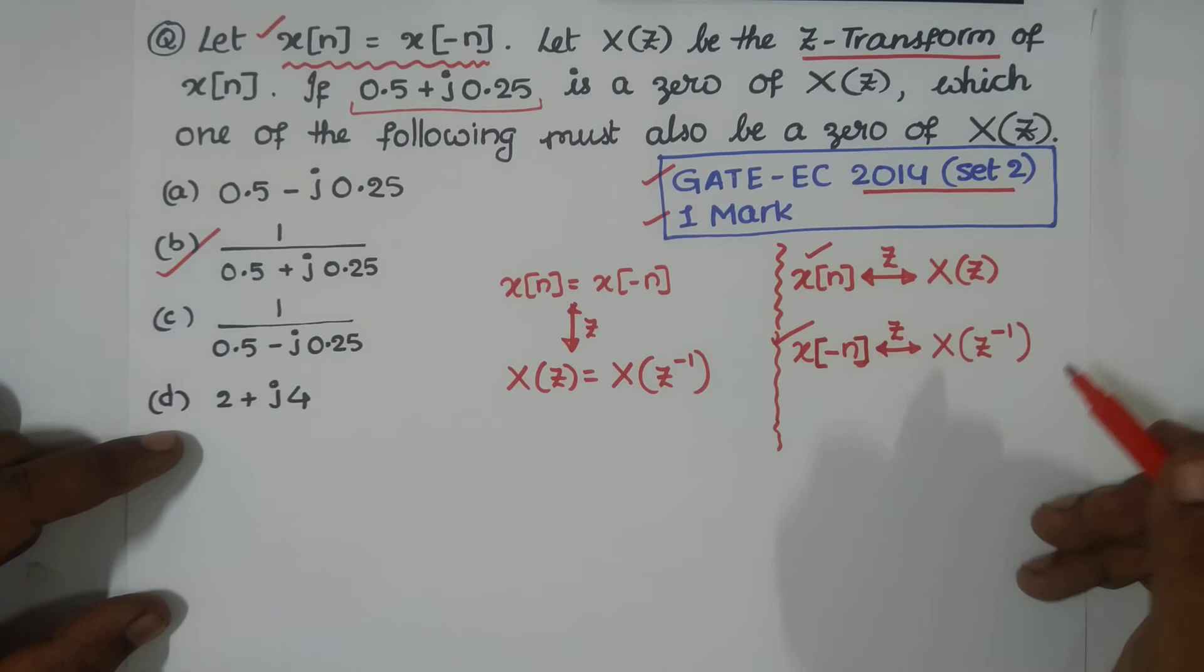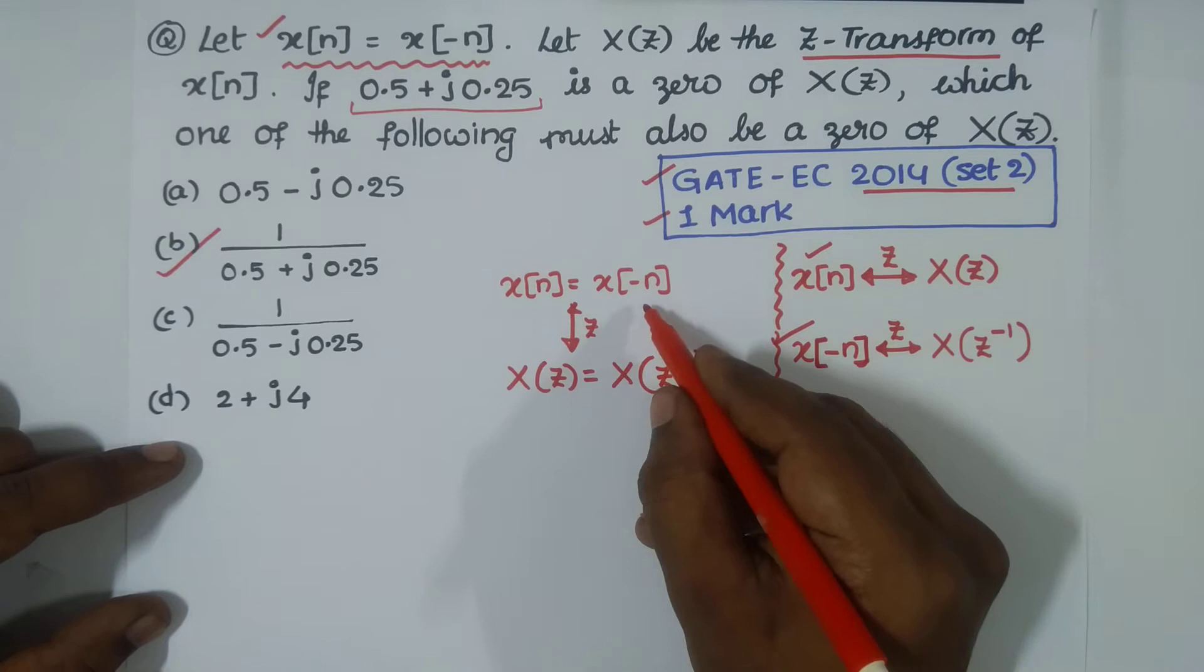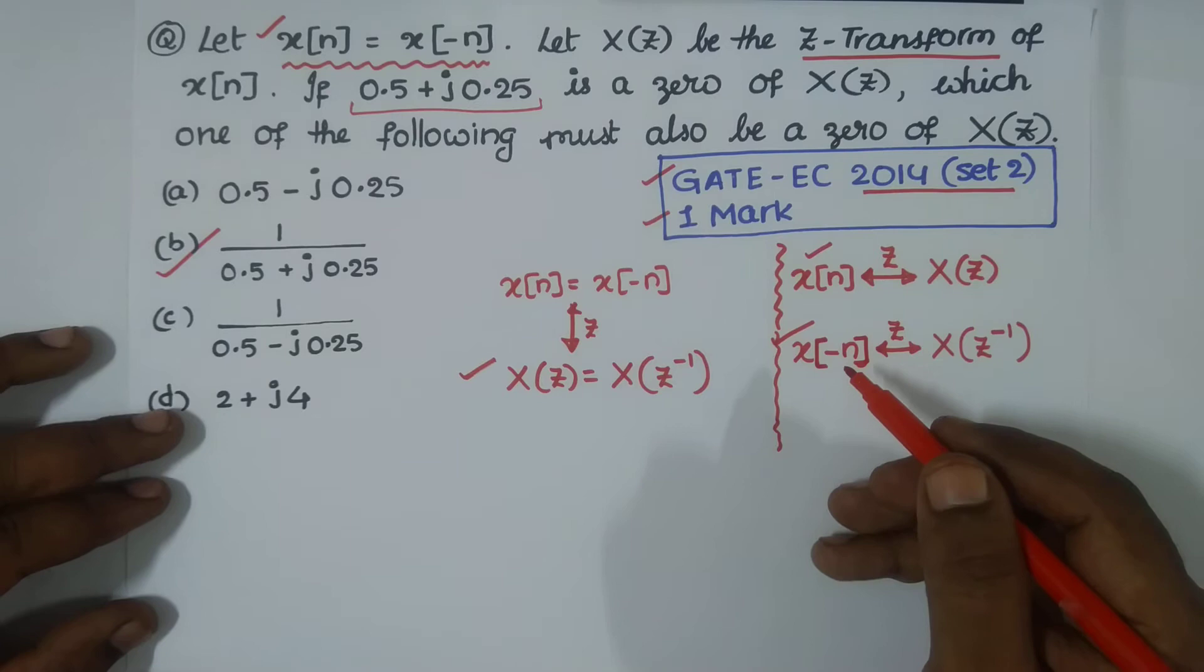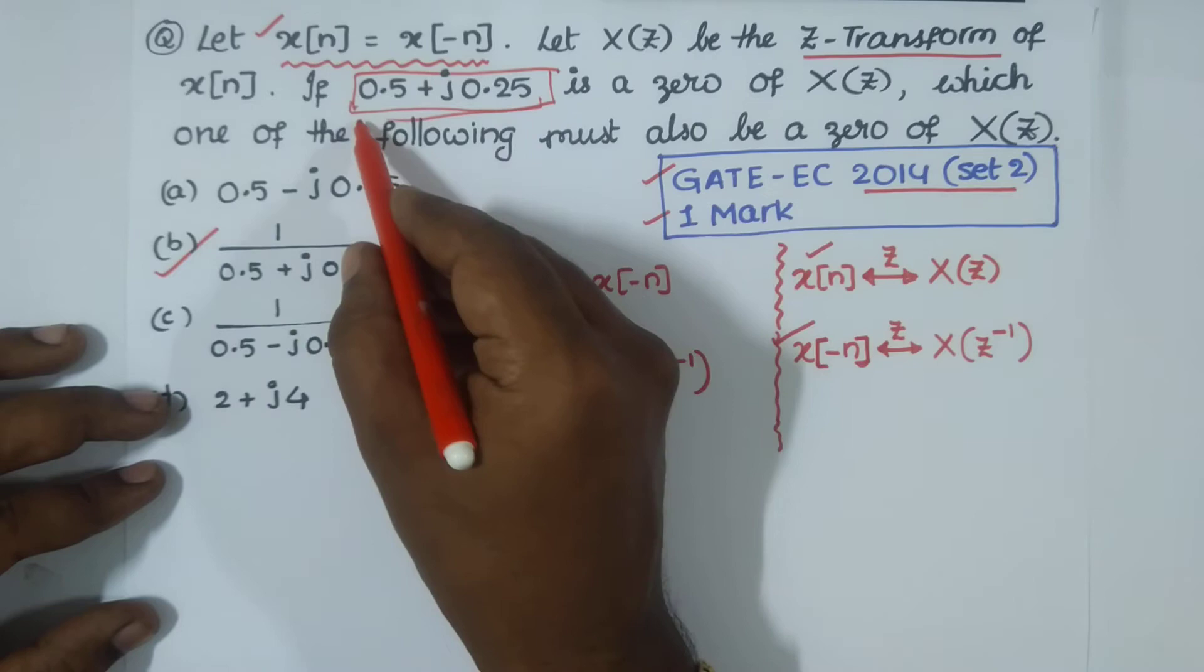With that in mind, since X[n] equals X[-n], we have X(Z) equal to X(Z^-1). Now you tell me, you have one complex zero: 0.5 + j0.25 is a zero of X(Z).